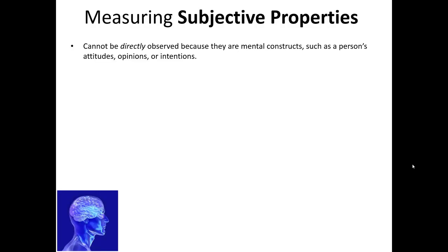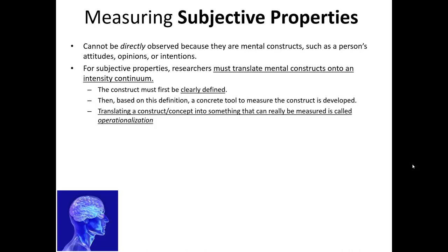Subjective properties are not directly observable, so we're going to find some sort of indirect way to measure these concepts. We must take these mental constructs and translate them to some form of intensity continuum. There's an important requirement here: whenever we have a construct, it must be clearly defined. For example, if we're going to make a measurement system to measure satisfaction, we must be much clearer about what satisfaction means. Once we've clearly defined the construct, we can develop a concrete tool to measure it.